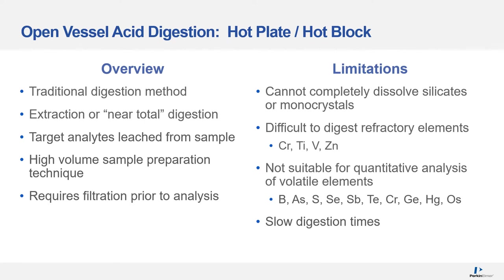Each sample digestion method has advantages and disadvantages. Open acid digestion is a traditional method — simple, inexpensive, and generally used in regulatory and compliance laboratories. However, only limited samples can be totally digested using this method. Refractory elements are difficult to digest, and due to evaporation of volatile elements during sample preparation, it is not suitable for quantitative analysis of elements such as boron, arsenic, and antimony.